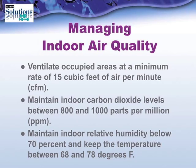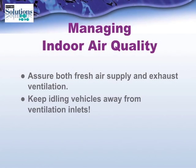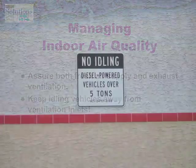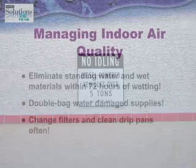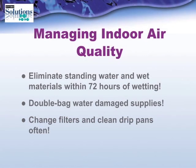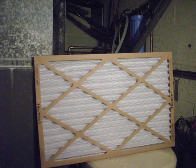We need to ventilate occupied areas at a minimum rate of 15 cubic feet of air per minute. We need to maintain indoor carbon dioxide levels between 800 and 1,000 parts per million, and maintain indoor relative humidity below 70% and temperature between 68 and 78 degrees Fahrenheit. Additionally, we need to assure both fresh air supply and exhaust ventilation, and keep idling vehicles away from the ventilation inlets. Eliminate standing water and wet materials within 72 hours of wetting, and double bag water-damaged materials and throw them out.